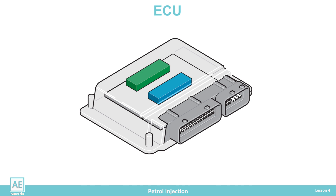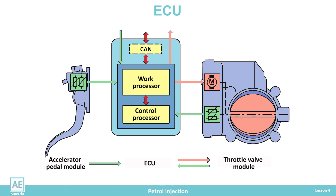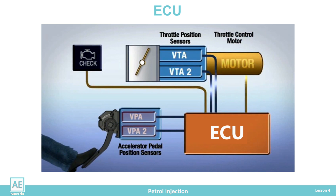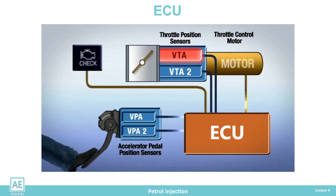Each ECU has two processors — one of which is working and the other is control. The operating microprocessor receives data from the sensors, processes them, and activates the actuators. In addition, it constantly monitors the correctness of all sensors and actuators connected to the ECU and its throttle module control functions. The control microprocessor is exclusively in the service of monitoring. They control each other and periodically cause feedback to check the state of the working and control processors. If any irregularity is detected in the operation of the processor, the engine is immediately shut down.